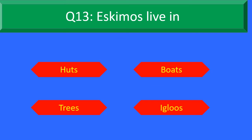Eskimos live in — Option A: Huts, Option B: Boats, Option C: Trees, and Option D: Igloos. Your time starts now.